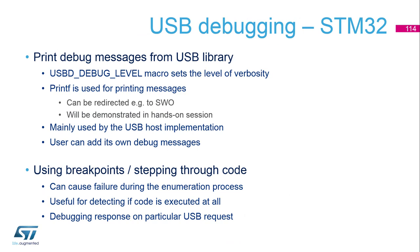For debug purposes, debug messages implemented in the USB library can also be used, mainly in the host part. These debug messages show mainly the states of the internal USB state machine executed inside the MCU, and the information observed is very limited compared to a USB analyzer. Debugging using breakpoints and stepping through code is possible more or less only with USB host. For USB device, it is not convenient, as the device may be disconnected by the host when a handshake on three consecutive transfers is missed.